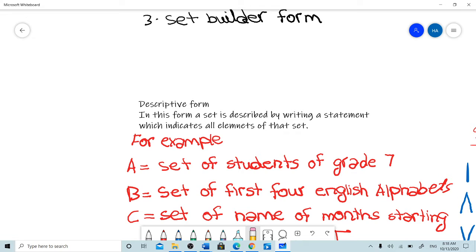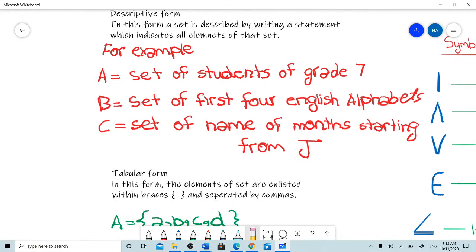In descriptive form, a set is described by writing a statement which indicates all elements of that set. For example: A equals set of students of grade 7, B equals set of first four English alphabets, C equals set of name of months starting from J.